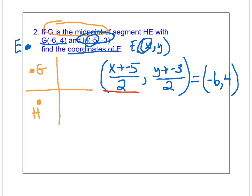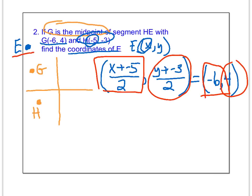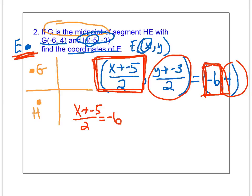Now I'm going to solve this. I'm actually going to solve two different equations, one for X and one for Y, and that's going to give me the point that I'm looking for, which is E. So X plus negative 5 over 2 equals negative 6. I've just taken the X, and I know the answer is negative 6, so I'm setting up an equation just using the X values.